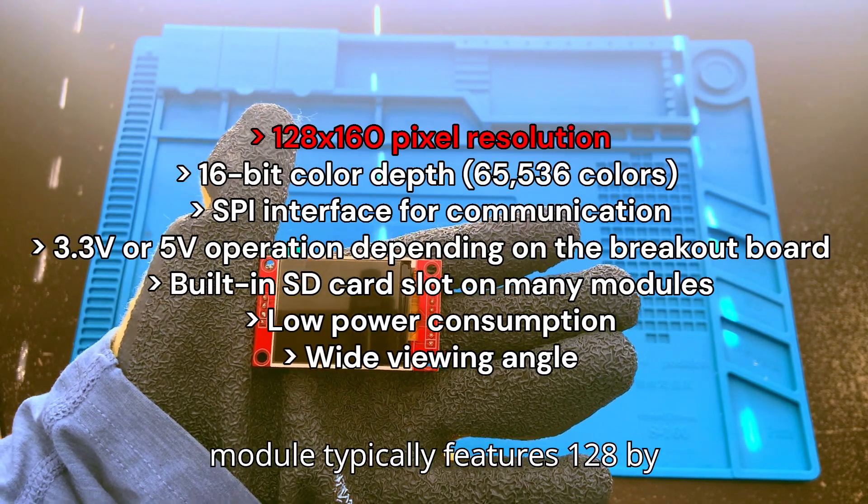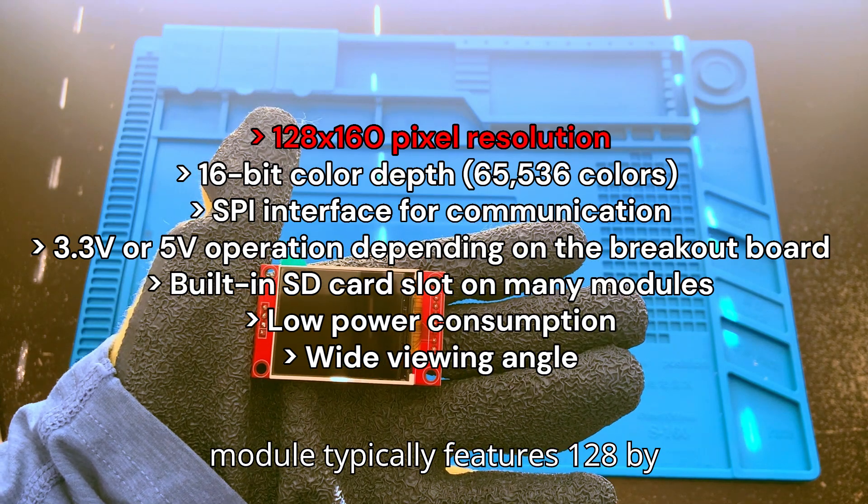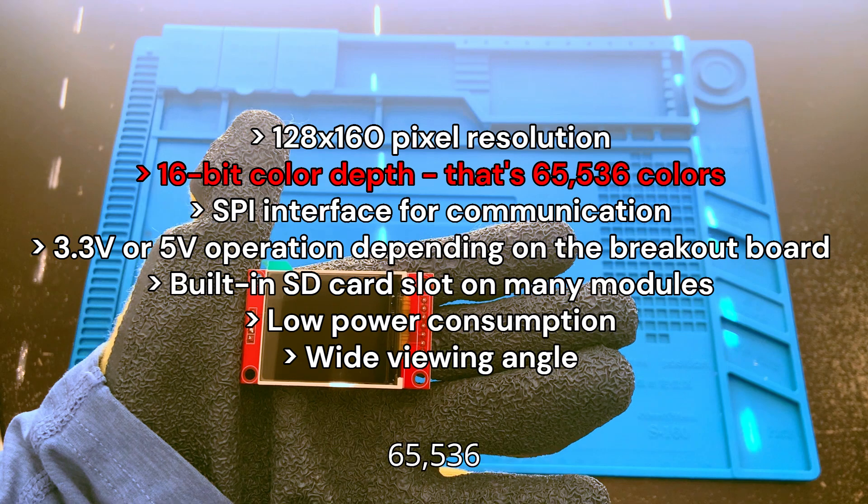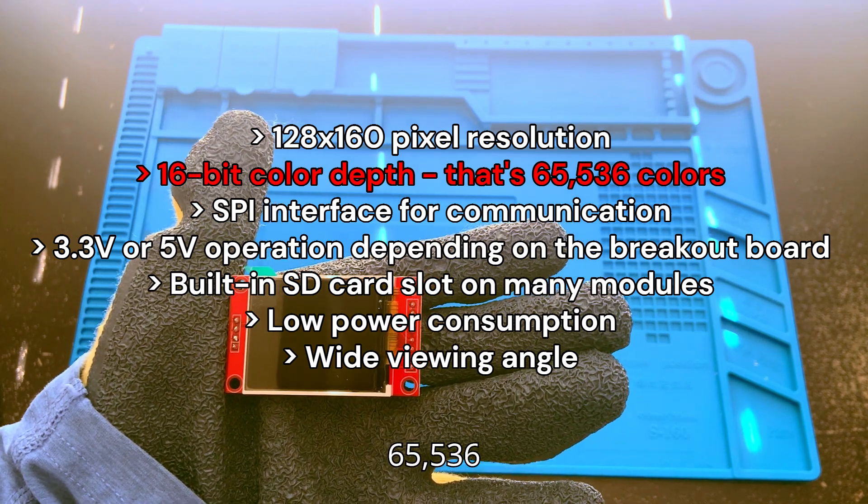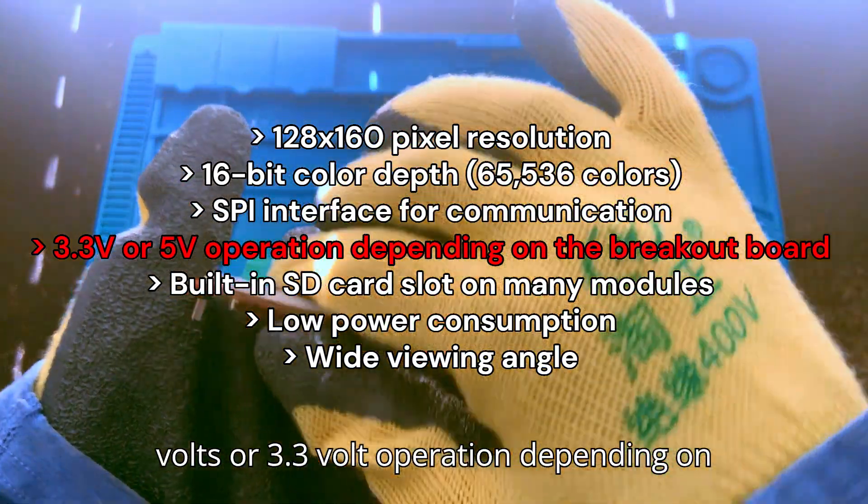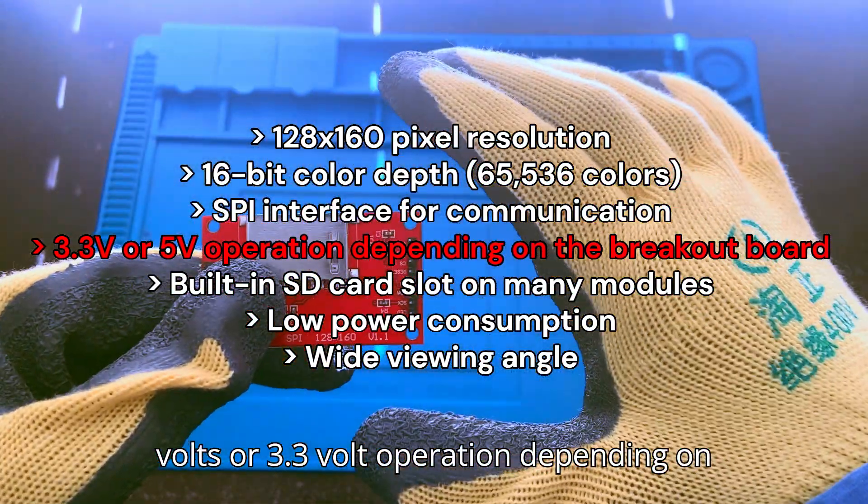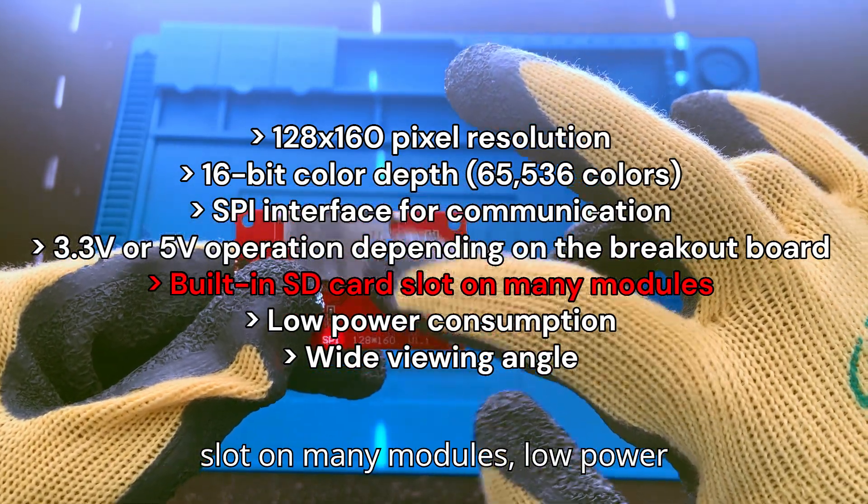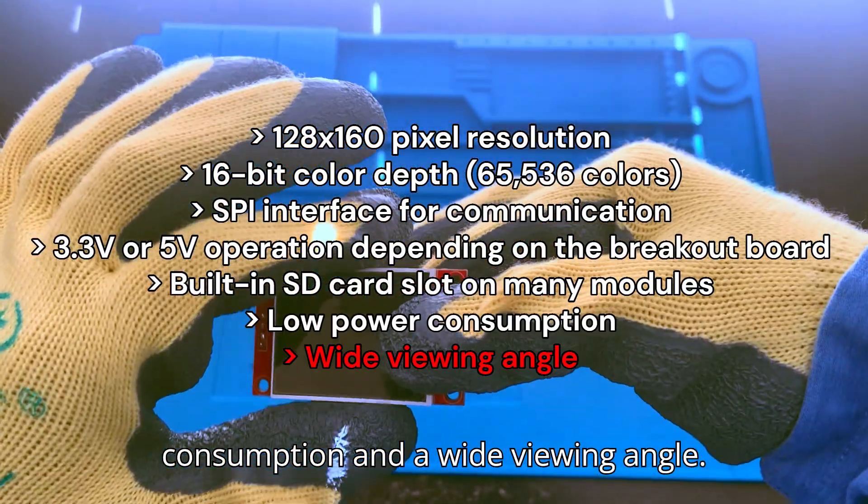The ST7735 module typically features 128 by 160 pixel resolution, 16-bit color depth, that's 65,536 colors, SPI interface for communication, 5 volts or 3.3-volt operation depending on the breakout board, a built-in SD card slot on many modules, low power consumption, and a wide viewing angle.